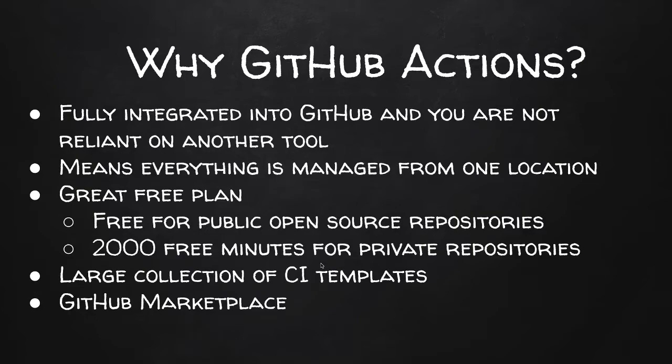What's great is there is a free plan for everyone. If you have your code hosted on a public open source repository, GitHub Actions is free — no subscription required, free out of the box. If you have a private repository, you get 2,000 free minutes per month that you can use for GitHub Actions.